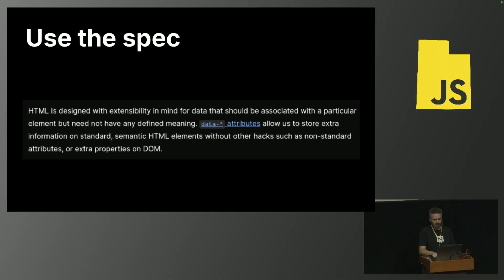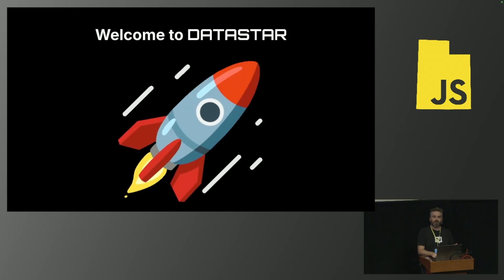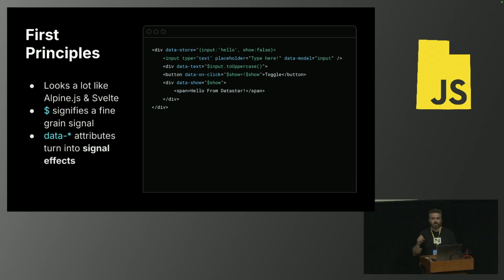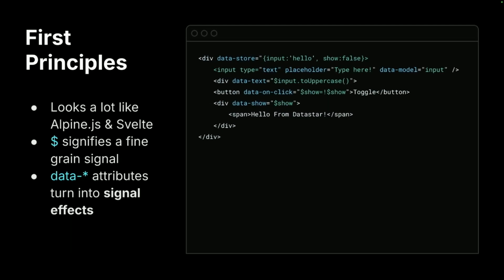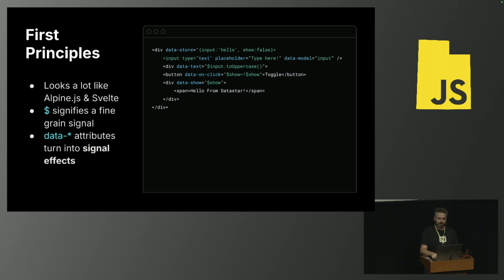I thought data-* attributes were a silly thing at first — what am I going to do with this? But I started going at first principles. The spec is 'data-star' and... huh, data star. So I made this library called Datastar. The first principle is you have to start with 'data-' for everything on the page. It's just a key and a value — a string and a string. So I made a store, a model. The dollar sign is a semantic like Svelte — it signals reactivity, so when this changes, it automatically reruns. Same thing with show and click. I was able to define semantics that made sense to me. This looks a lot like Alpine or parts of Svelte.